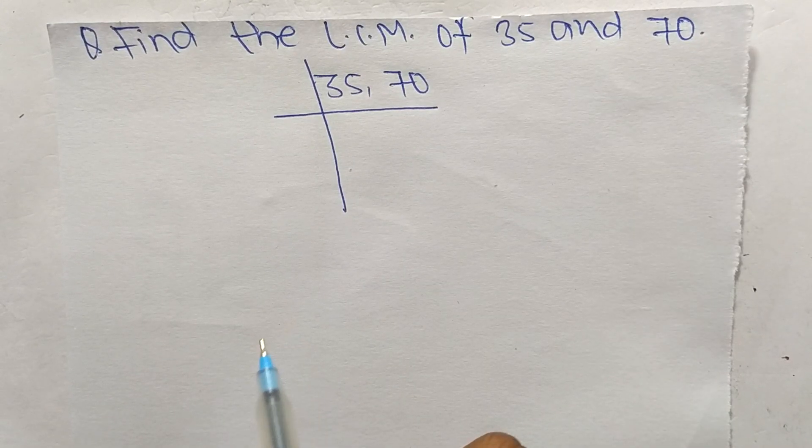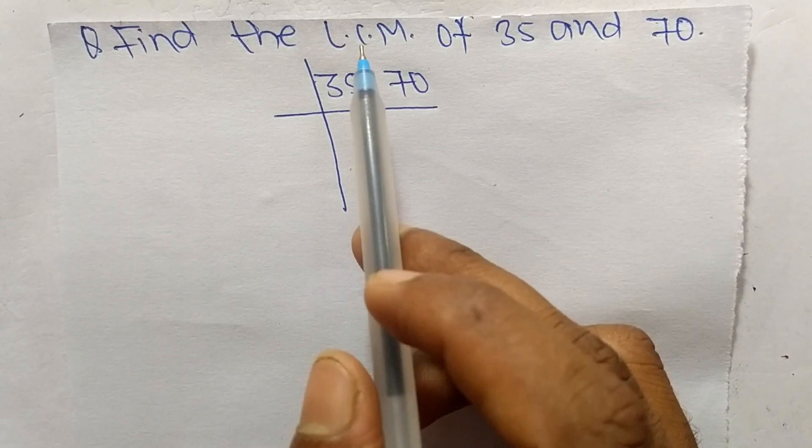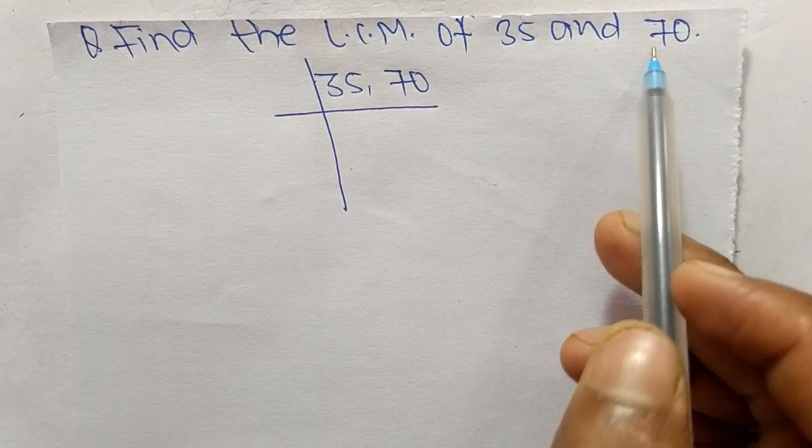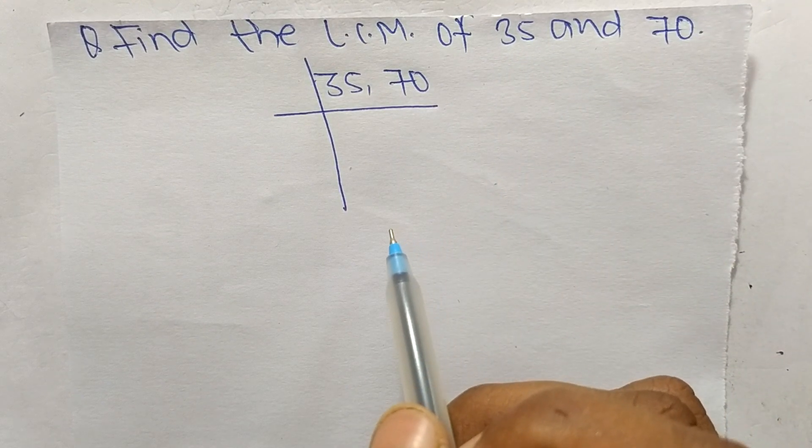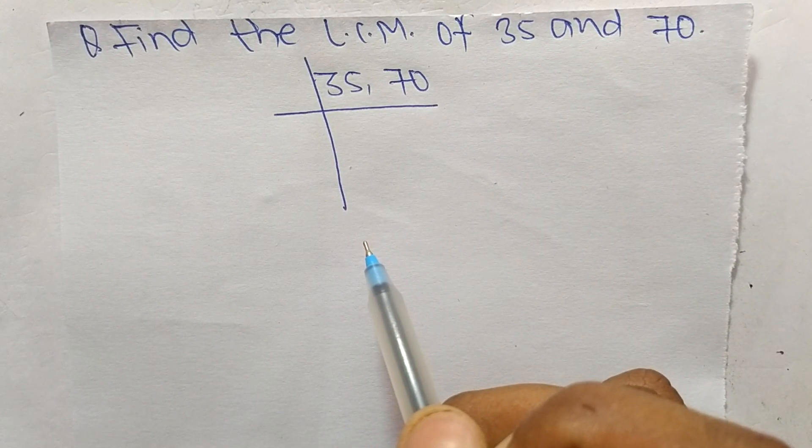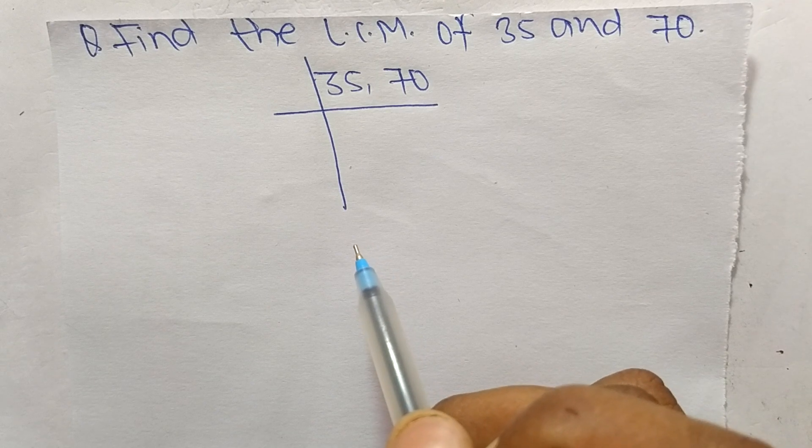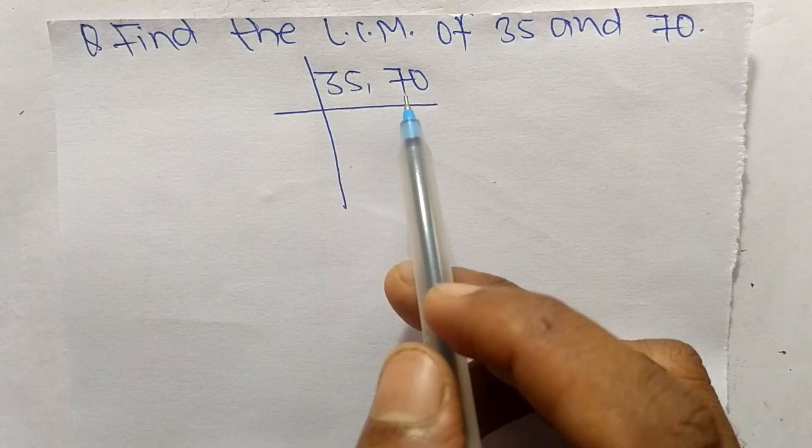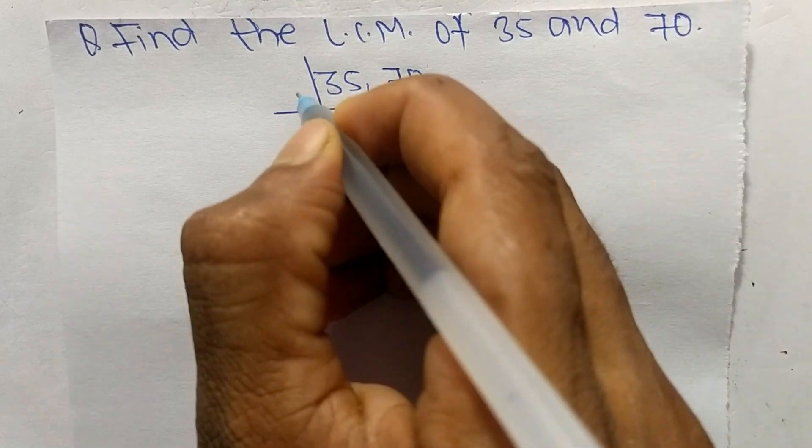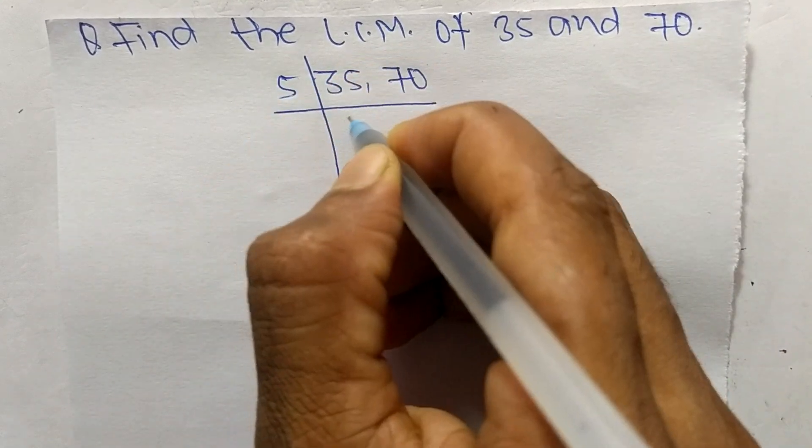Today in this video we shall learn to find the LCM of 35 and 70. To find LCM, first we choose the lowest number that can exactly divide 35 and 70, so the number is 5.